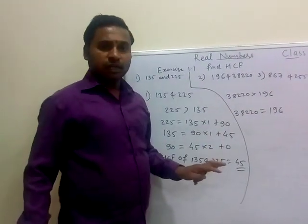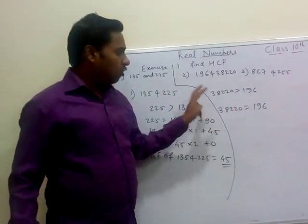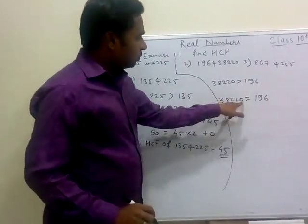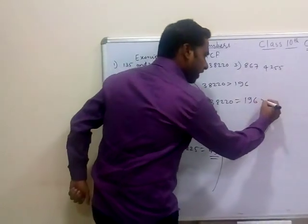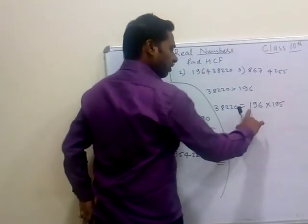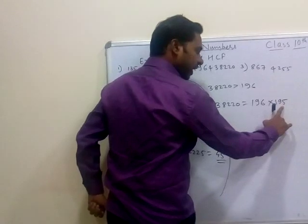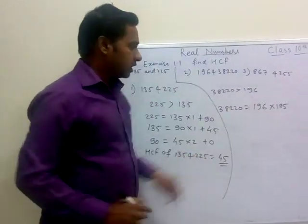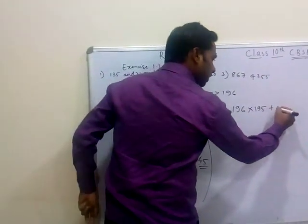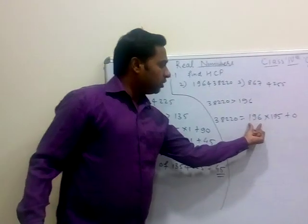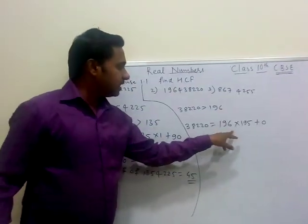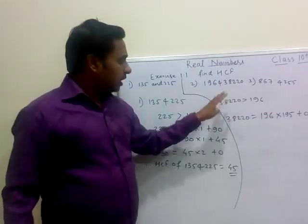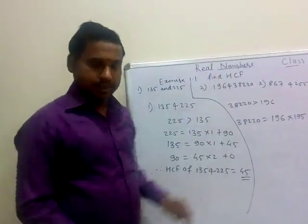196 multiplied by 195 equals 38,220. You can cross-check this by calculating. So our remainder here is 0. That means in the first step itself we get the answer — since dividing 38,220 by 196 gives remainder 0, the highest common factor is 196. So HCF = 196.